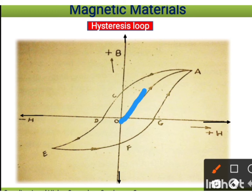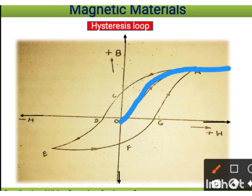As we apply the magnetic field, the substance gets magnetized progressively until it reaches point A, where magnetization is maximum — this is called saturation. Beyond saturation, increasing the applied magnetic field will not increase the magnetization further; it remains constant.